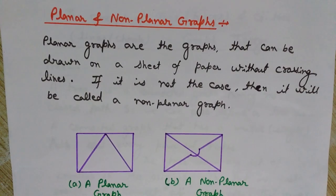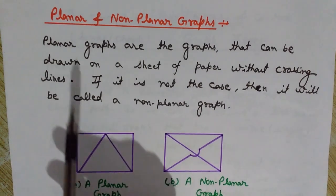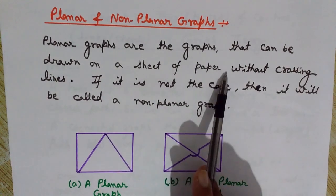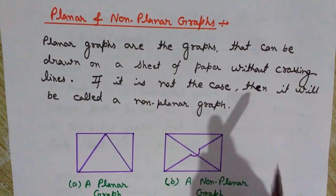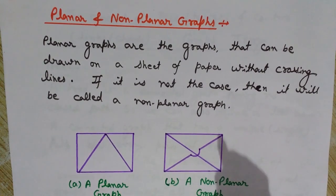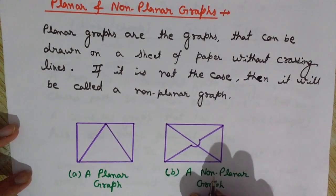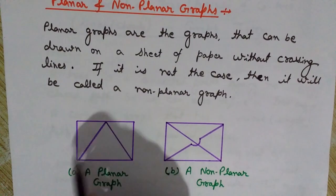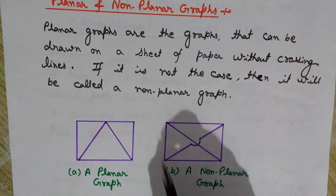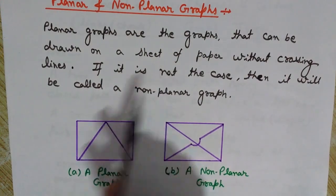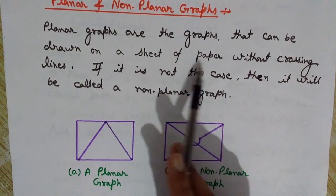Now let's understand what we mean by planar and non-planar graphs. There are two kinds of graphs: planar and non-planar. Planar graphs are graphs that can be drawn on a sheet of paper without crossing lines. If that is not possible, then we call it a non-planar graph.